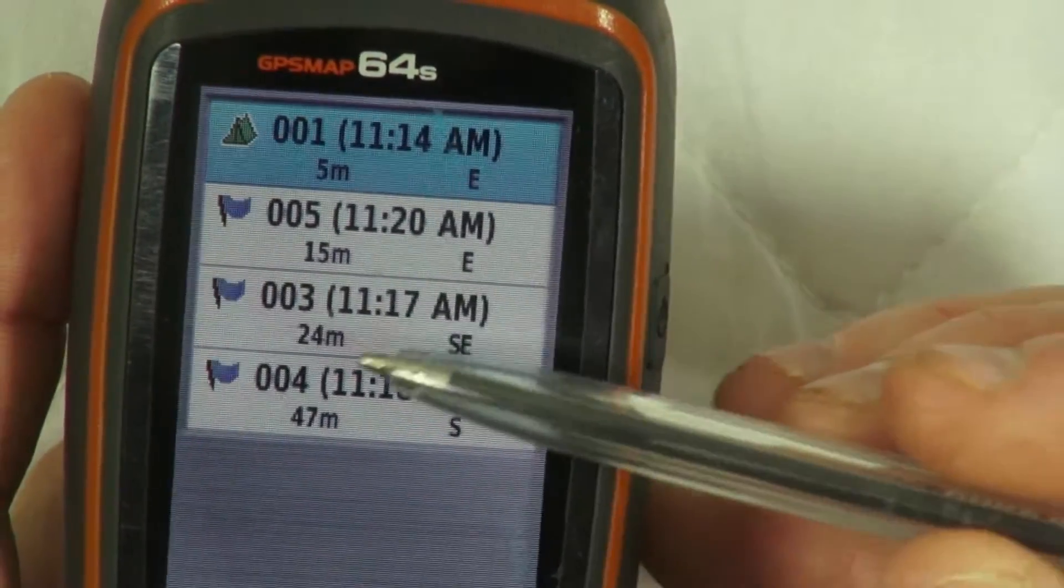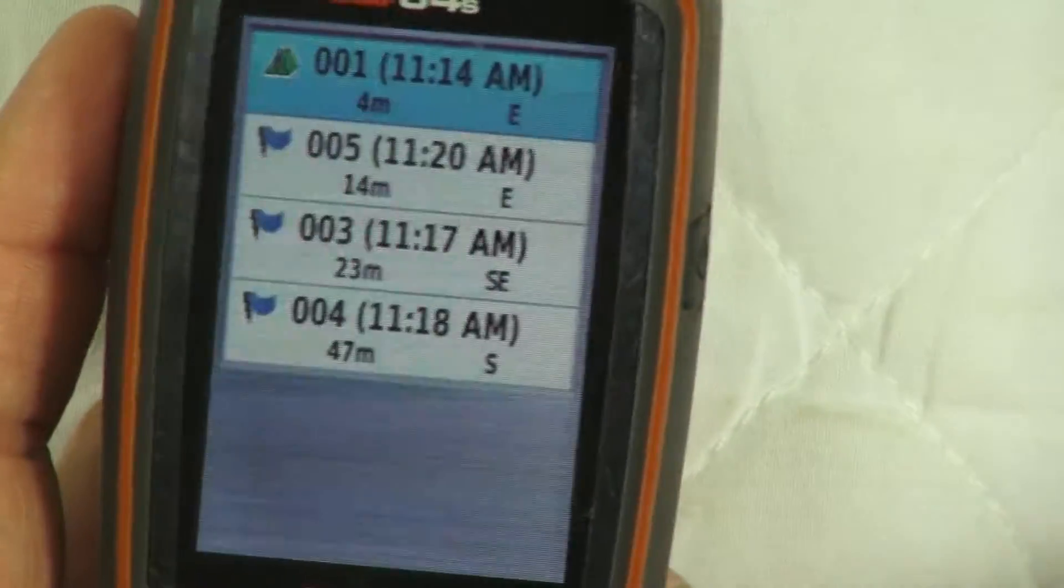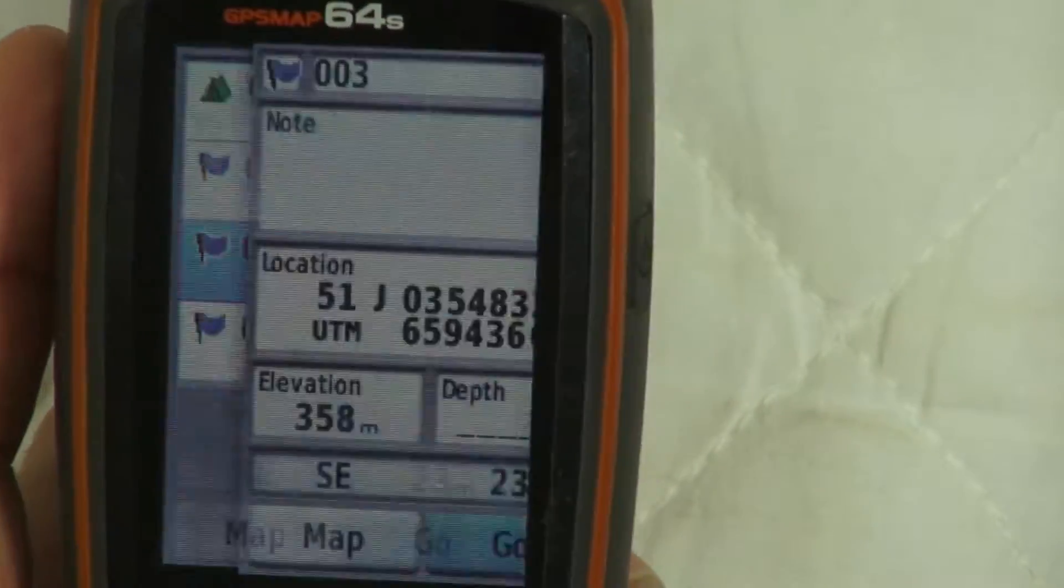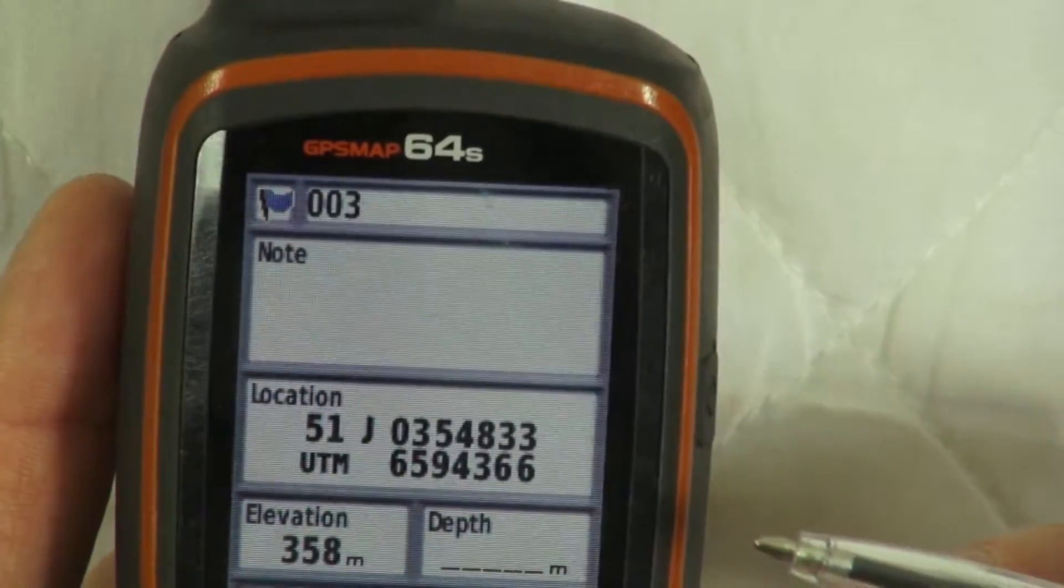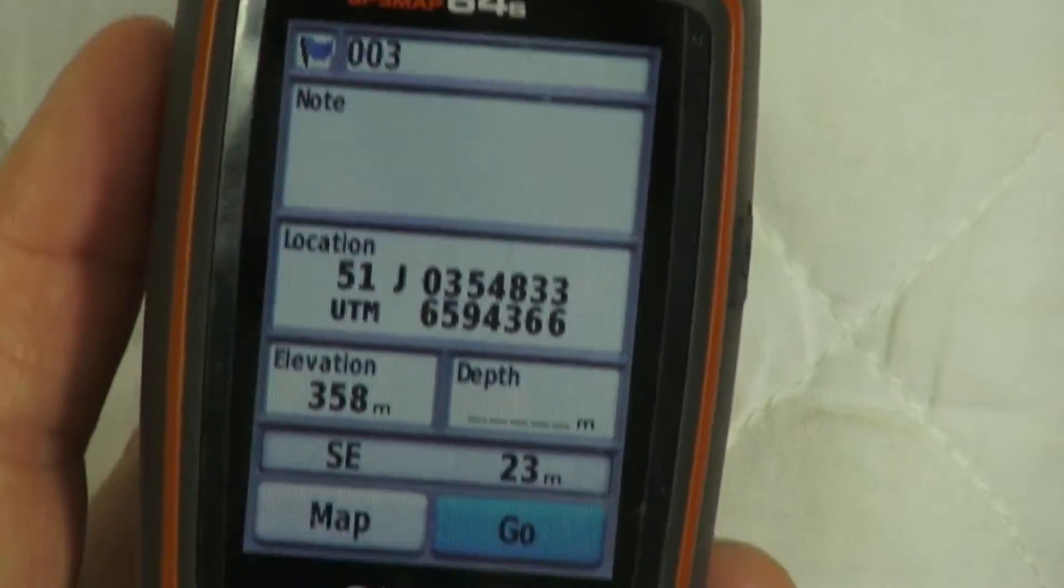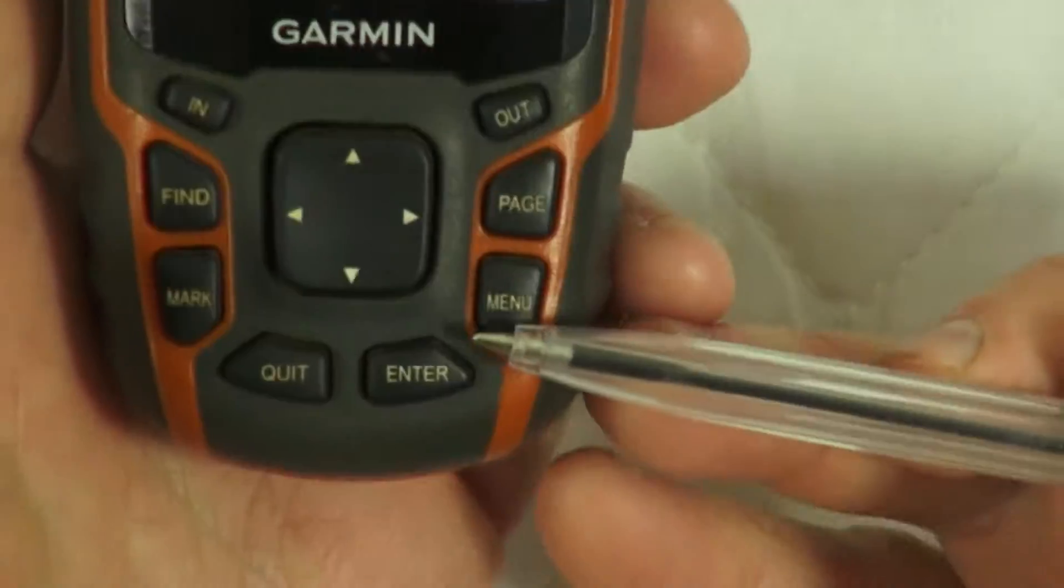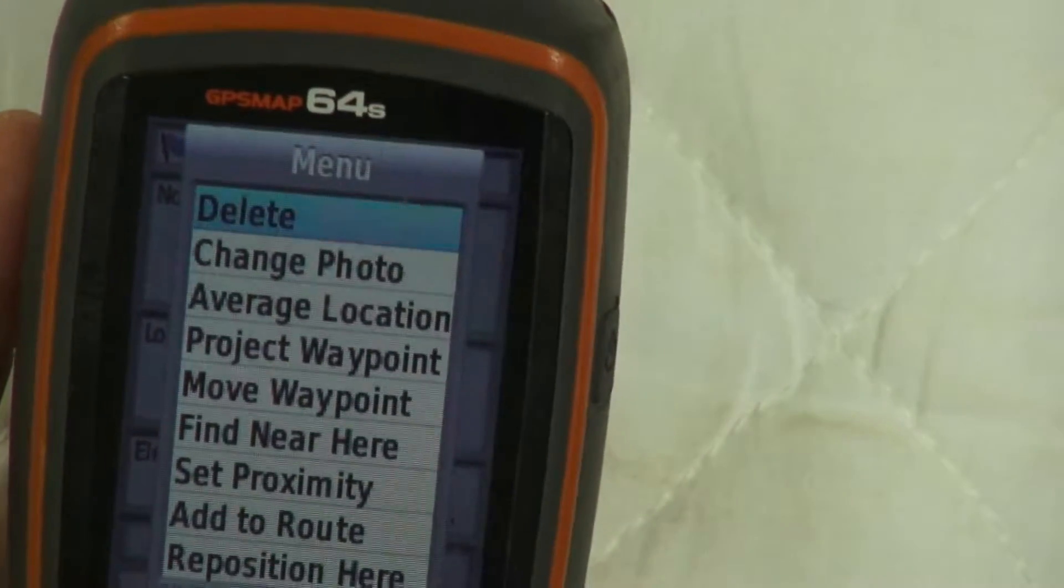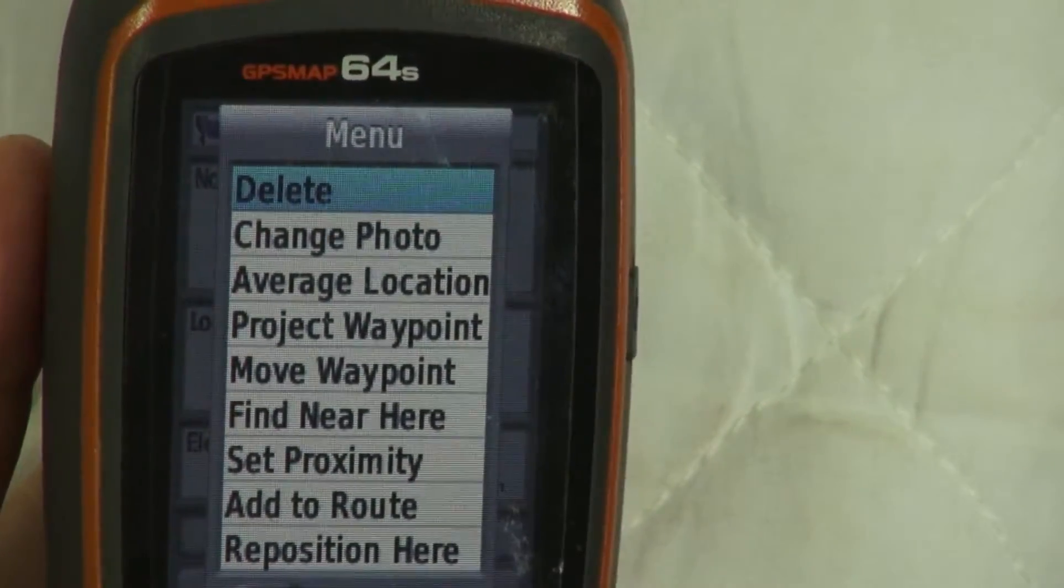Let's say we want to delete this one here, which is 003. Using the rocker, we highlight it and press enter. You can see this is waypoint 003, the one we want to delete. Press the menu button and there it is at the top: delete.